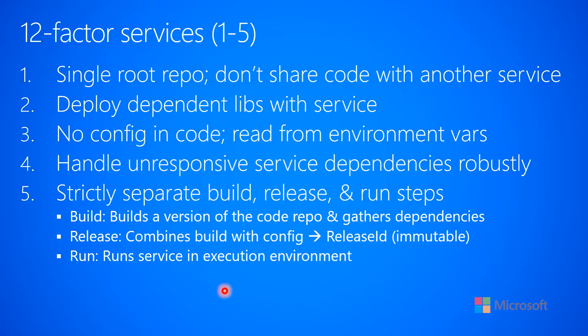Factor four is to handle unresponsive service dependencies robustly. When you're talking to another service that may be down, you want to handle things in a robust way. This was touched on in the previous section about architecting for distributed cloud apps and embracing failure. It's possible that a service is there but not replying, so this factor focuses on that kind of resiliency — being robust against unresponsive dependencies.